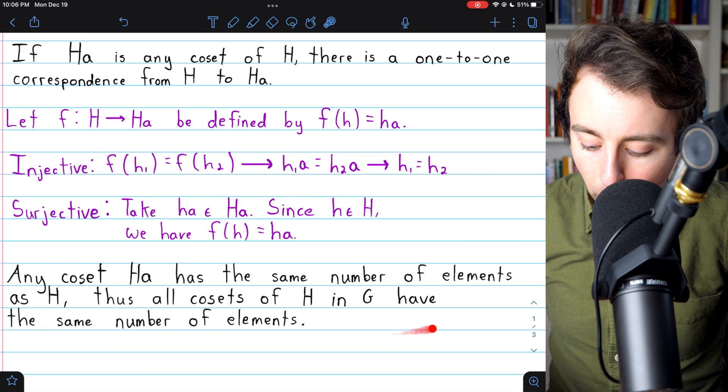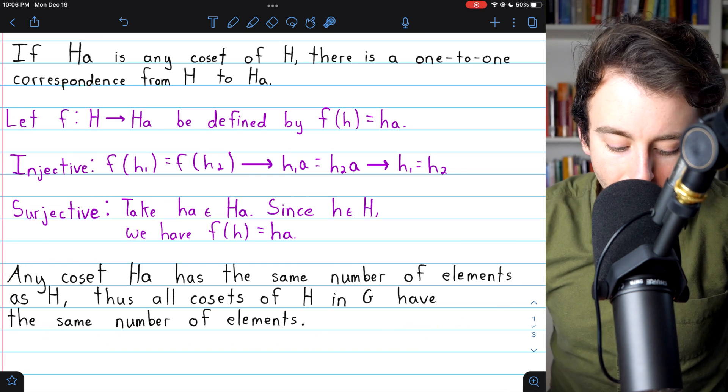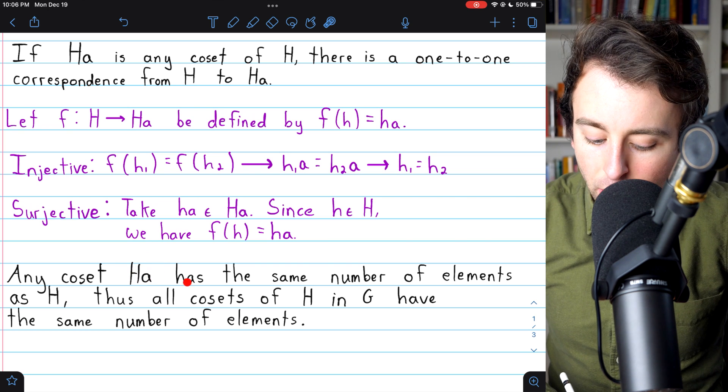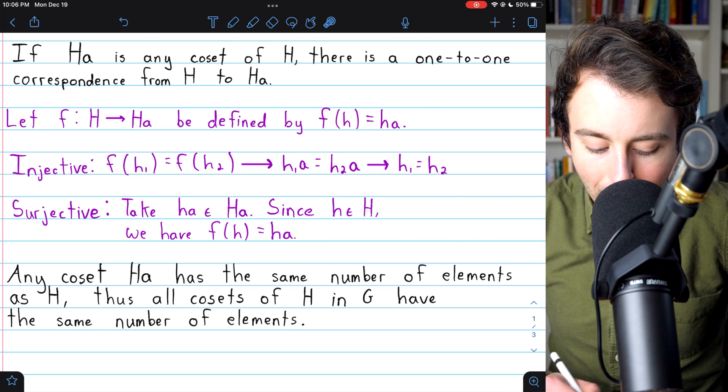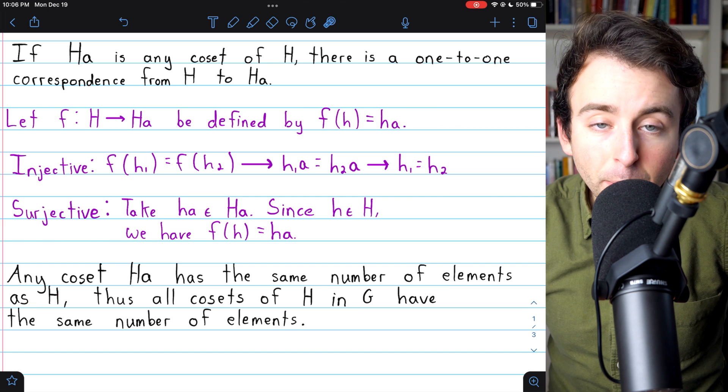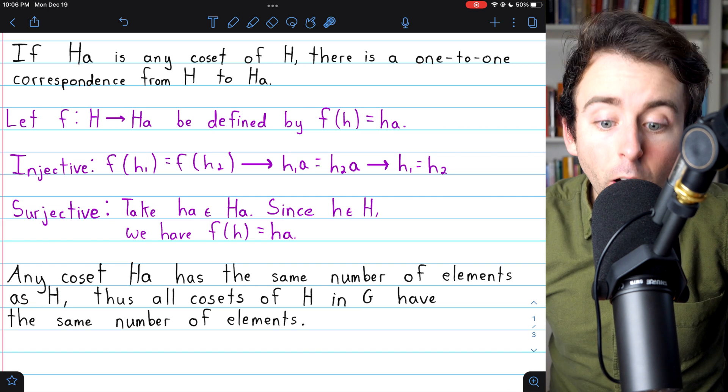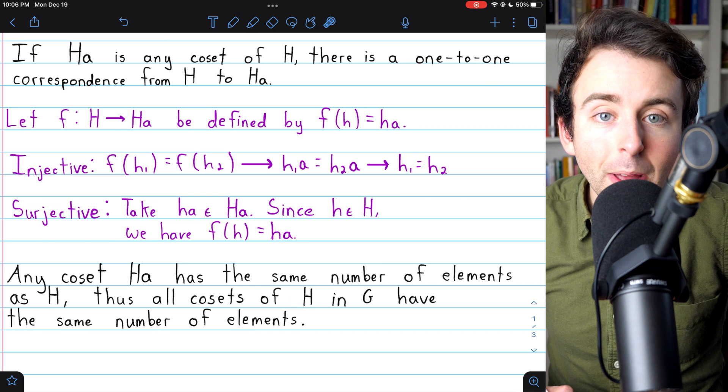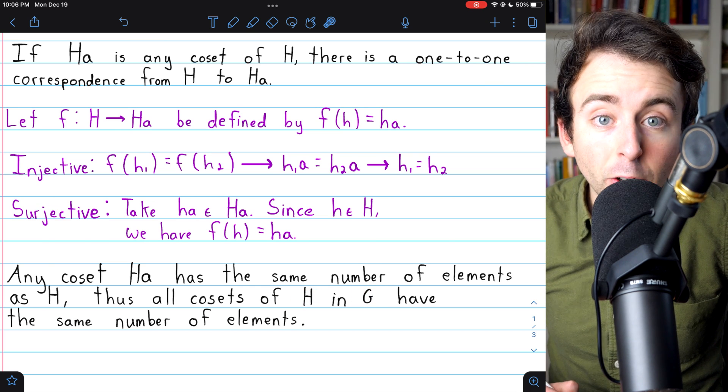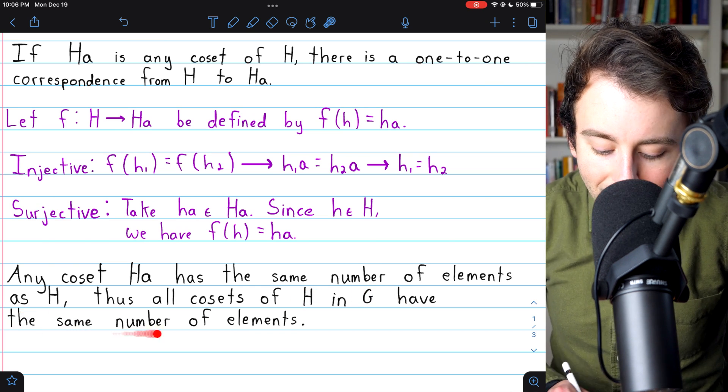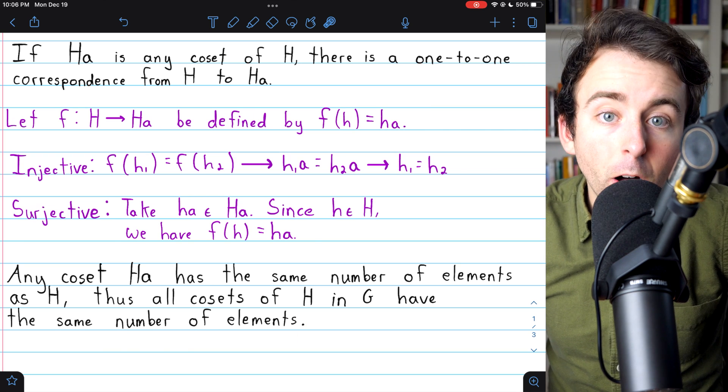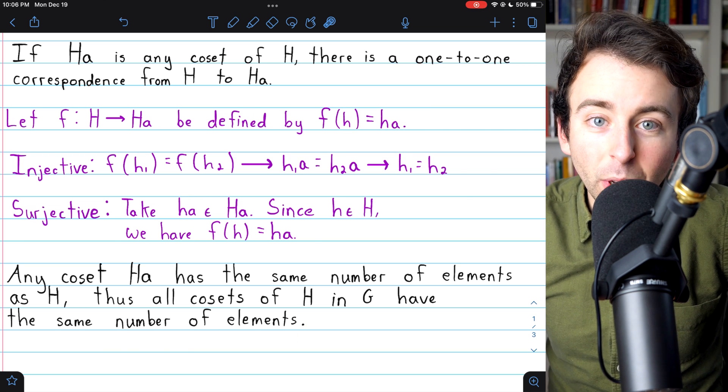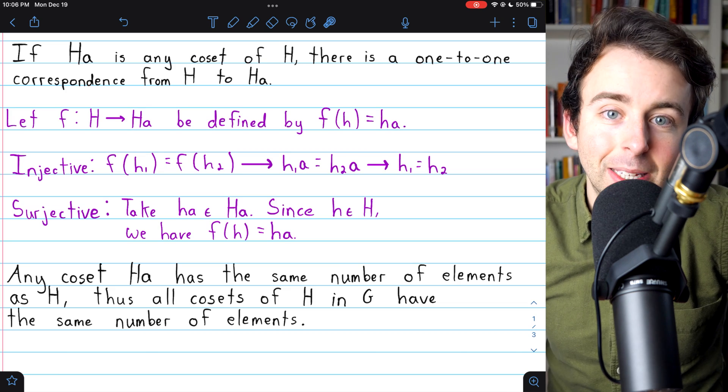So again, let's visit this important consequence of what we've proven. Any coset HA, we just proved that it will have the same number of elements as the subgroup H. And what that means is that all cosets of the subgroup H in the containing group G will have the same number of elements. All cosets of a subgroup will have the same number of elements.